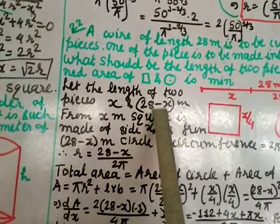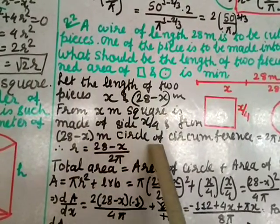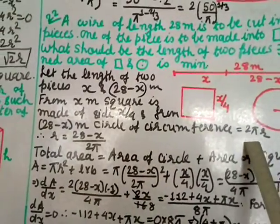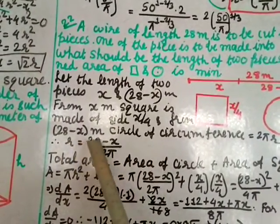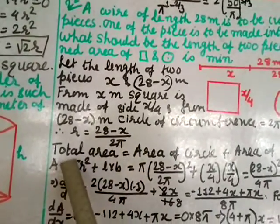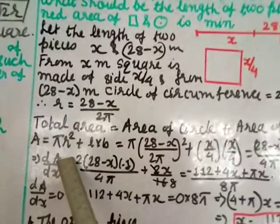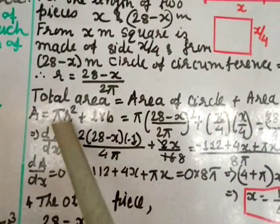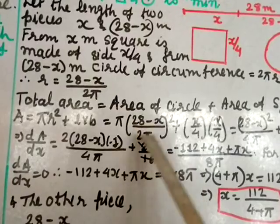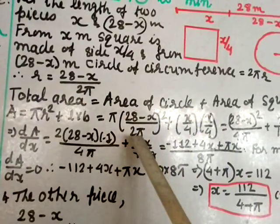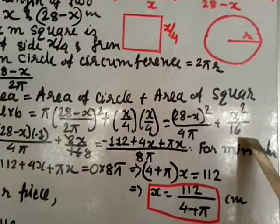From x metres, a square is made with each side x/4. From 28 minus x metres, a circle is made with circumference 2πr = 28 minus x, so r = (28 minus x)/(2π). Total area A = area of circle plus area of square = πr squared + (x/4) squared.